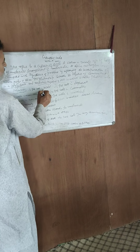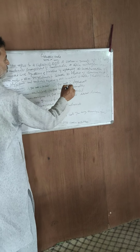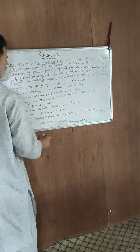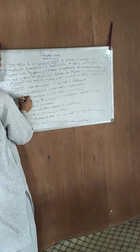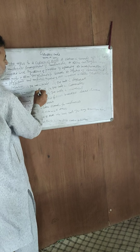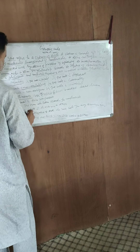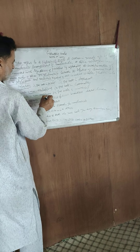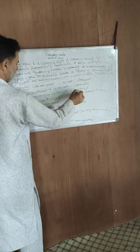The code is a triplet. The code is degenerate. The code is non-overlapping. The code is common. The code is non-ambiguous. The code is universal.